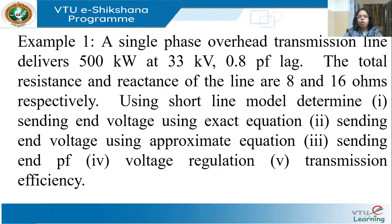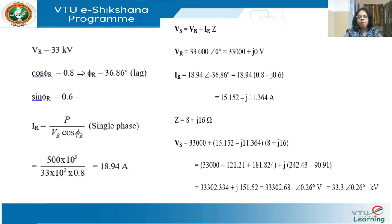Let us take this question. A single-phase overhead transmission line delivers 500 kilowatts at 33 kV, 0.8 power factor lagging. The total resistance and reactance of the line are 8 and 16 ohms respectively. Using the short line model, determine the sending end voltage using the exact equation and the approximate equation, the sending end power factor, the voltage regulation, and the transmission efficiency.